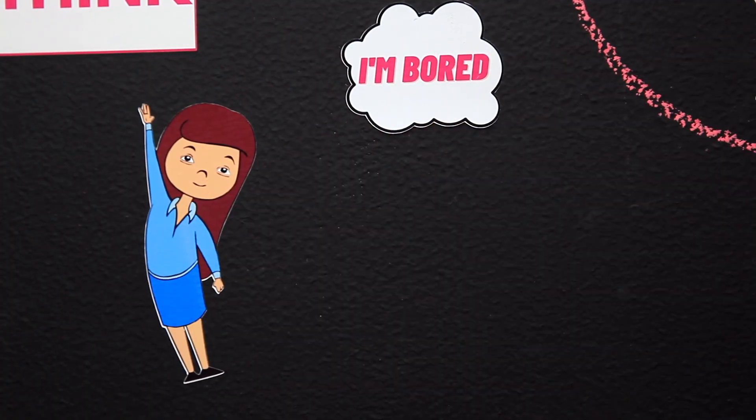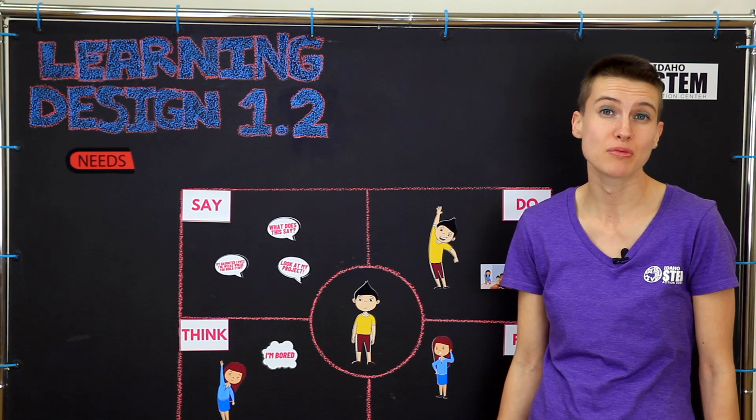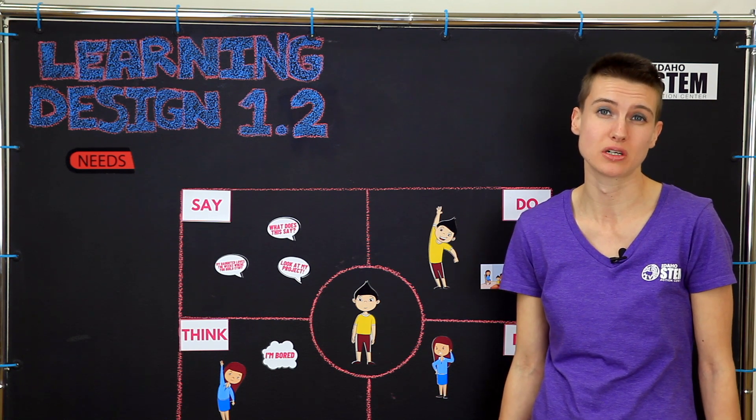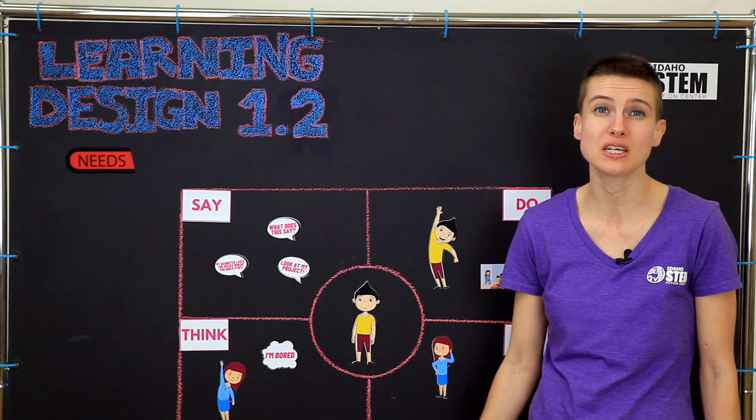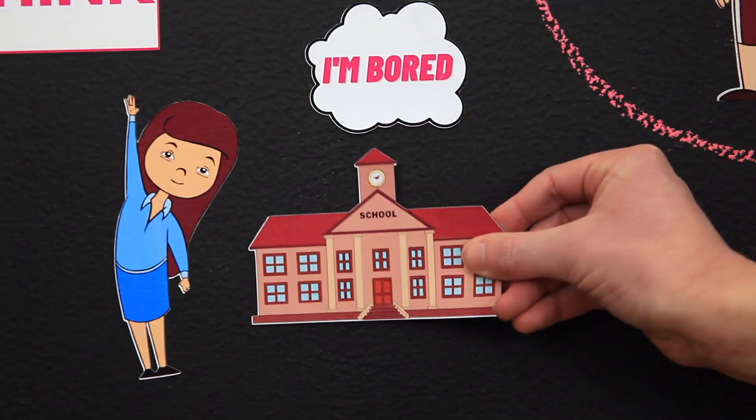Let's say I have a learner who always asks permission to go to the bathroom or get a drink of water, even though I haven't told her to. I might infer that she associates my program with school and thinks that the rules are the same.